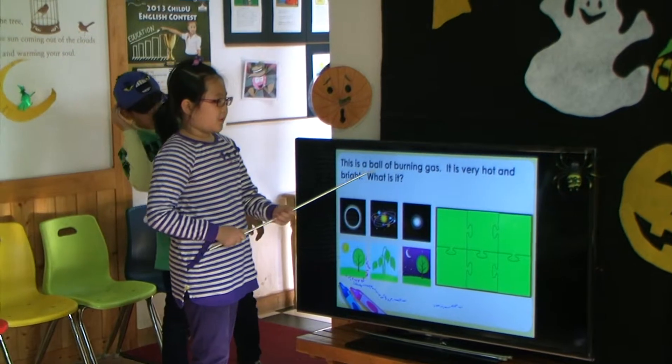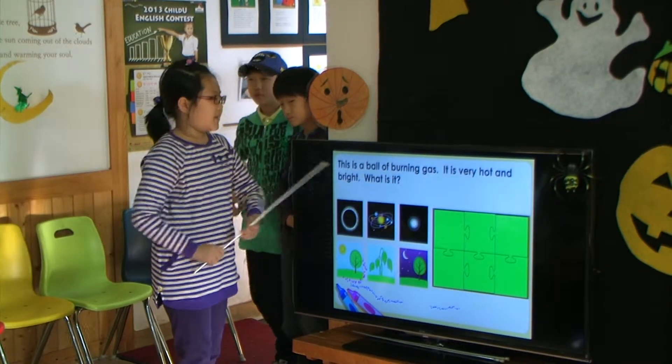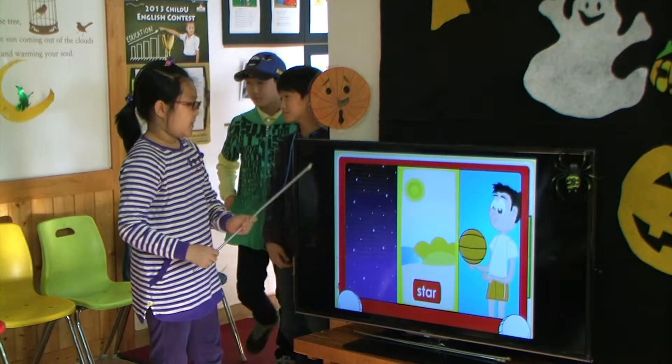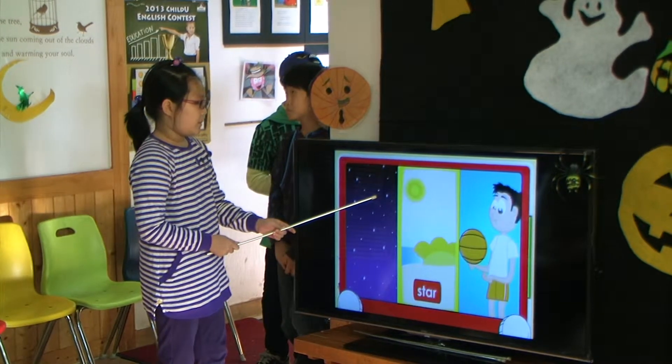This is a ball of fire. It is very hot and bright. What is it? Stars. Most stars are seen in the sky at night. They look like tiny points of light.